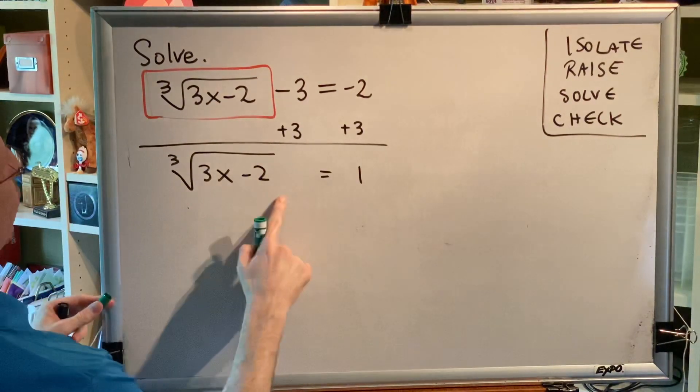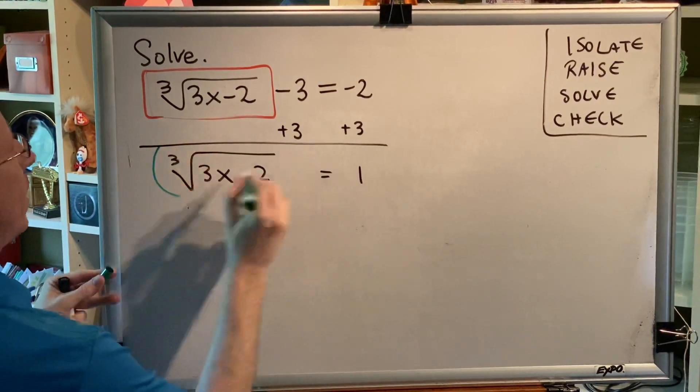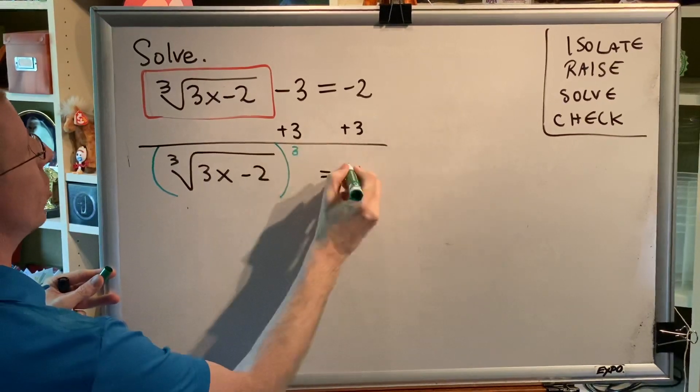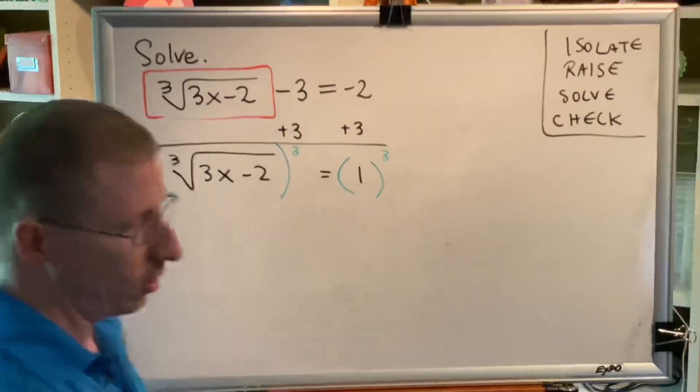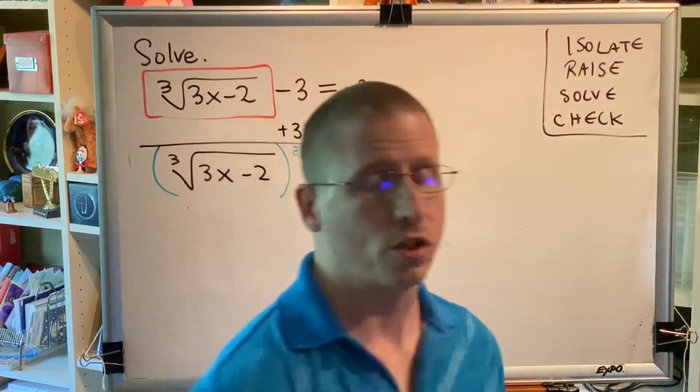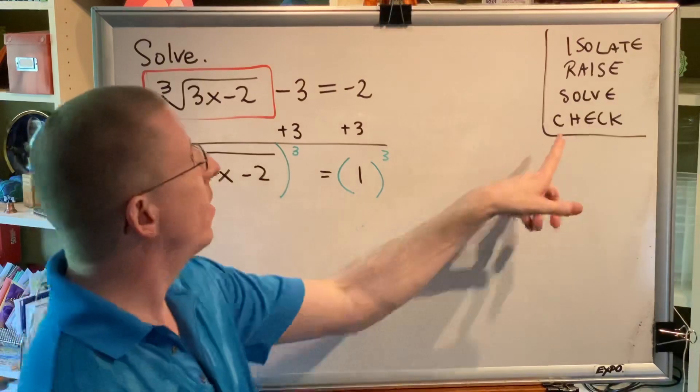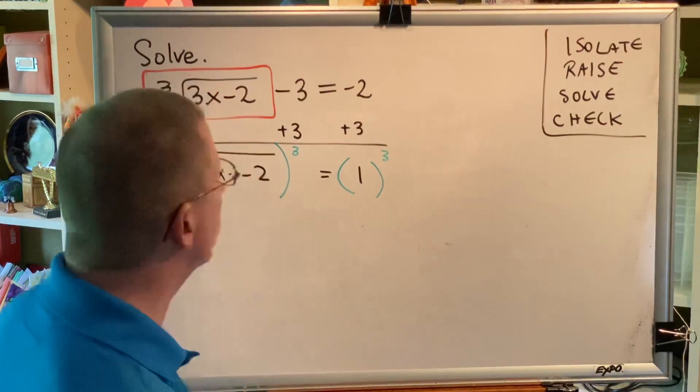This is our isolated radical, and its index is 3. So, we raise both sides of this equation to the third power. Doing this may introduce extraneous solutions, which are solutions that are actually wrong. And for that reason, that's why checking is a required step.